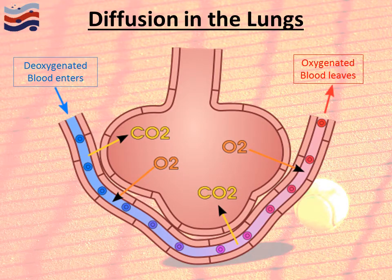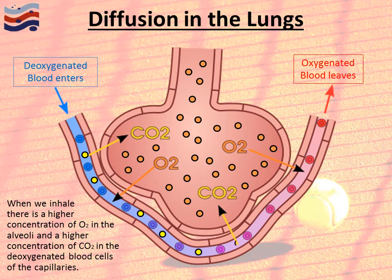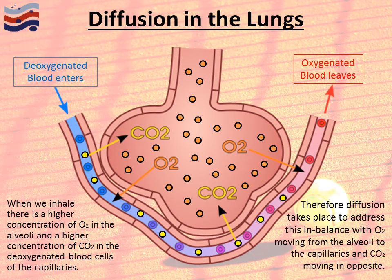Looking at that in relation to the lungs: when we inhale air, there is a higher concentration of oxygen in the alveoli and a higher concentration of CO2 in the deoxygenated blood in the capillaries. The orange circles represent oxygen and the yellow circles represent carbon dioxide. Diffusion takes place to address this imbalance — oxygen travels through the walls of the alveoli into the capillaries, and carbon dioxide goes in the opposite direction. This process happens every time we breathe in and out.